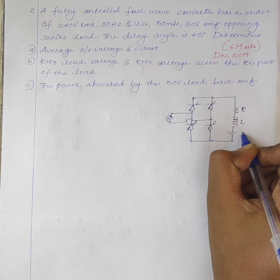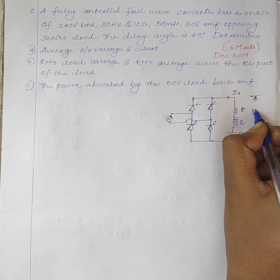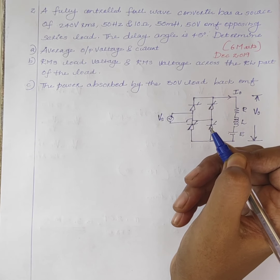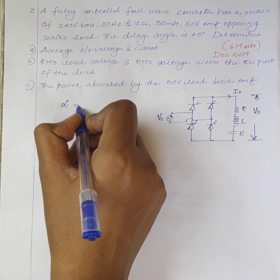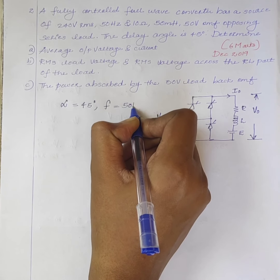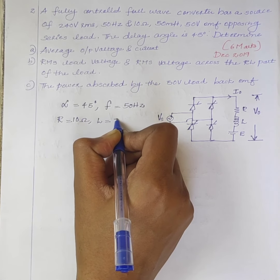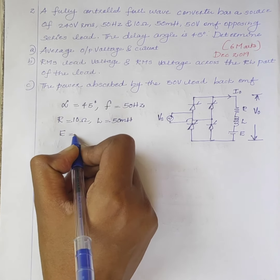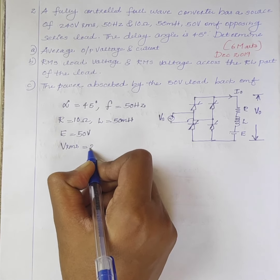The circuit has an RLE load. The output current is I0 and the output voltage is V0. The supply voltage is Vs. From the question: delay angle alpha equals 45 degrees, frequency F equals 50Hz, R equals 10 ohm, L equals 50mH, E equals 50V, and VRMS equals 240V.